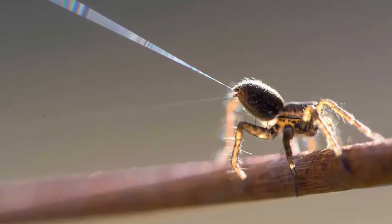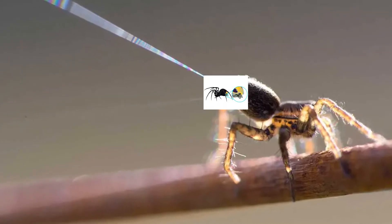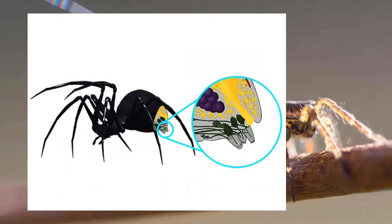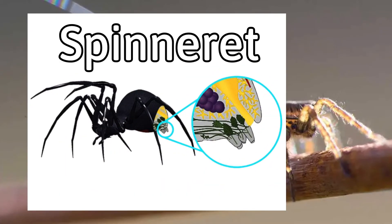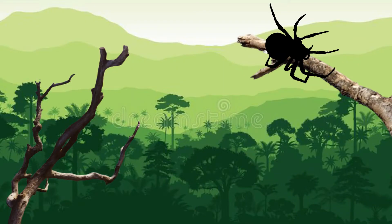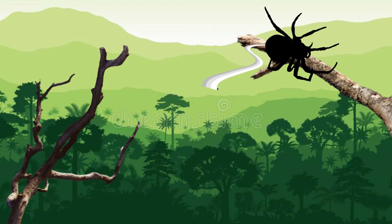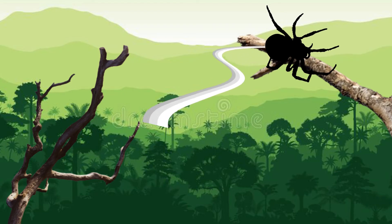Instead, it simply creates these strands from a silk spinning organ known as a spinneret and lets the wind carry it to another surface.